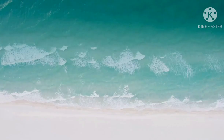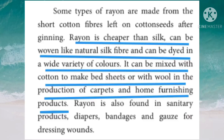Some types of rayon are made from the short cotton fibers left on cotton seeds after ginning. Rayon is cheaper than silk. It can be woven like natural silk fiber and dyed in a wide variety of colors. It can be mixed with cotton to make bedsheets or with wool in the production of carpets and home furnishing products. Rayon is also found in sanitary products, diapers, bandages and gauze for dressing wounds.